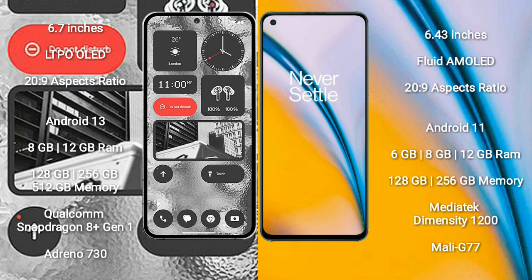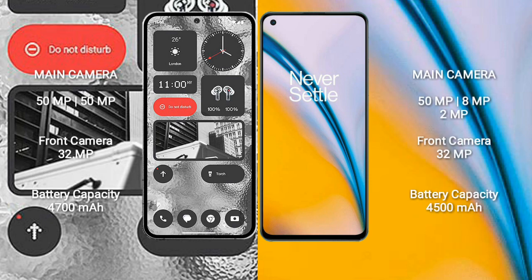Nothing Phone 2 comes with 8GB or 12GB RAM and 128GB, 256GB, or 512GB internal storage, powered by a Qualcomm Snapdragon 8 Gen 1 processor and Adreno 730 GPU. OnePlus Nord 2 comes with 6GB, 8GB, or 12GB RAM and 128GB or 256GB internal storage, powered by a MediaTek Dimensity 1200 processor and Mali-G77 GPU.